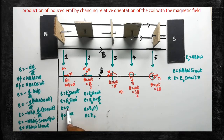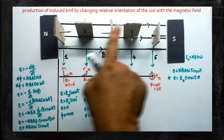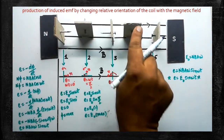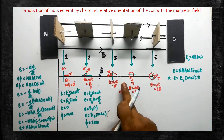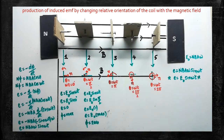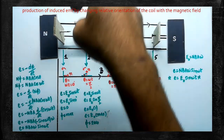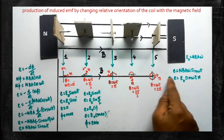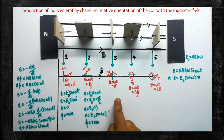The coil is then rotated in the anti-clockwise direction. After rotating through an angle of 90 degrees, the normal and the magnetic field are perpendicular. The angle between normal and magnetic field is 90 degrees, so theta = ωt = π/2. In the second position we calculate the EMF: E = E₀·sin(π/2).